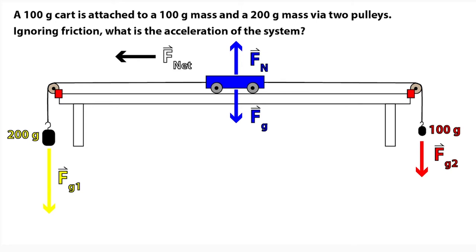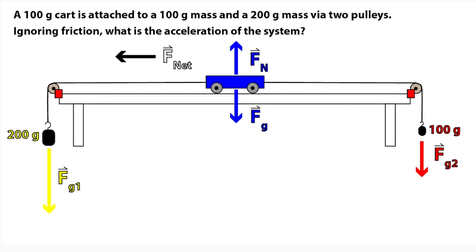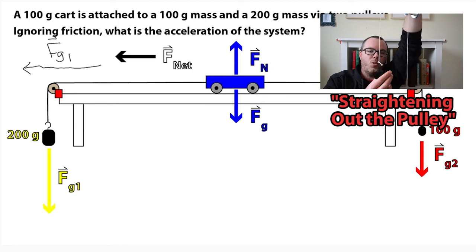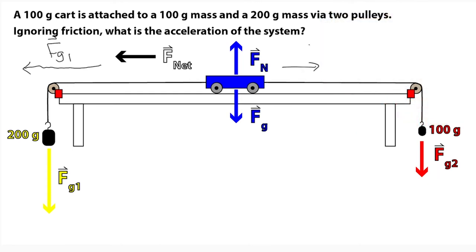Here I've got the free body diagram for the question we were just looking at, and we're going to take a look at what these pulleys do. The pulleys are there really just to change the direction of the forces acting over them. The force of gravity gets transmitted all the way up through the pulley to the cart. What we want to do is redraw those forces so they're all collinear — straighten out those pulleys. Force of gravity one, instead of pointing down, I'm going to have it point to the left, making it about half the size since it's half the mass. Force of gravity two is pointing to the right instead of down.